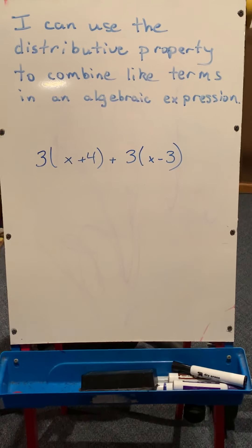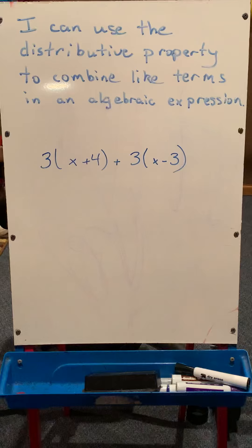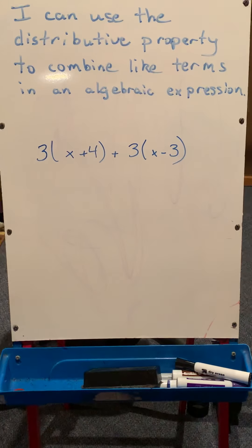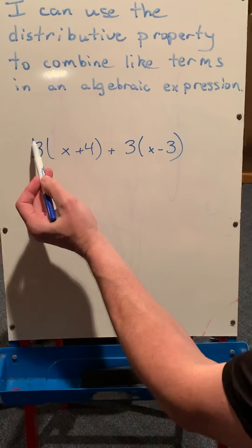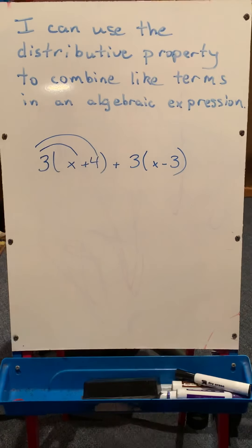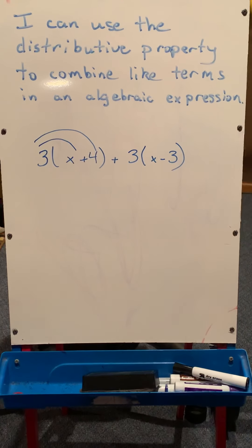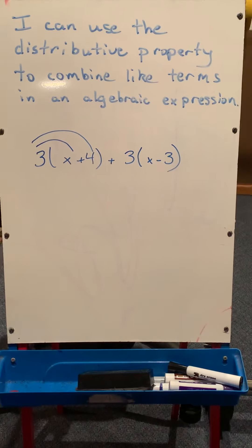Okay, so the first part, the first expression is 3 times the quantity x plus 4 plus 3 times the quantity x minus 3. Remember, the distributive property means we're going to distribute the 3 through the parentheses, so sometimes we draw those little marks there to remind us to multiply the 3 times everything in there.